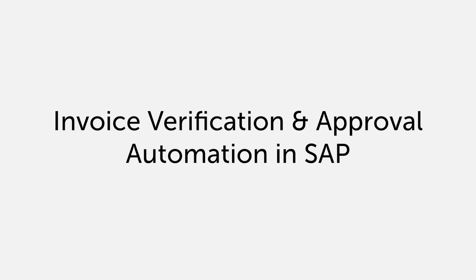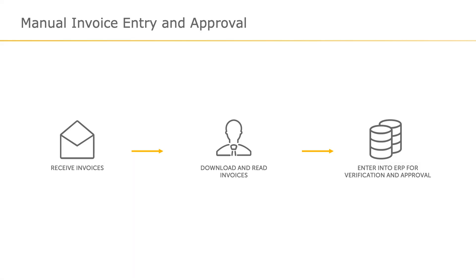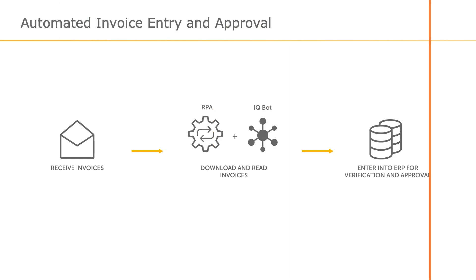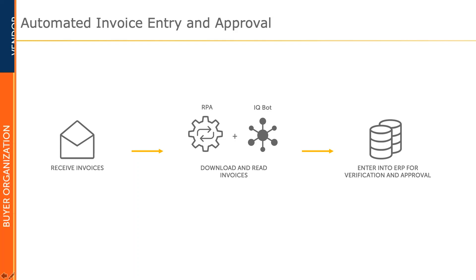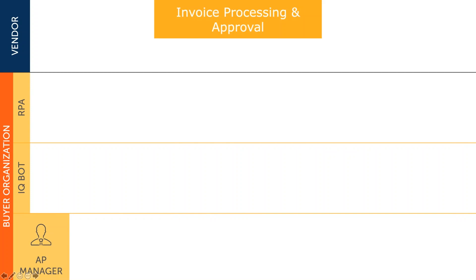The entry and approval of an invoice in an ERP system is a very common process that occurs in almost every enterprise. This process typically involves the receipt of an invoice from a vendor, the manual entry of the invoice into the enterprise's ERP system, and then a human approval for each invoice. This video demonstrates how Automation Anywhere automates this process with ease using IQBot Intelligent Document Processing in conjunction with RPA.